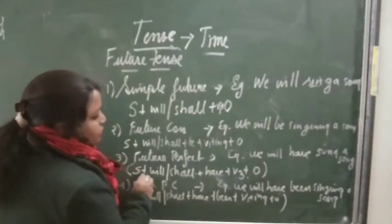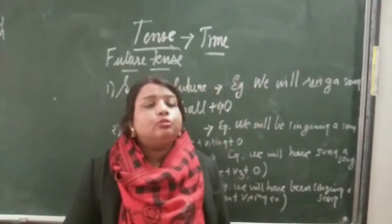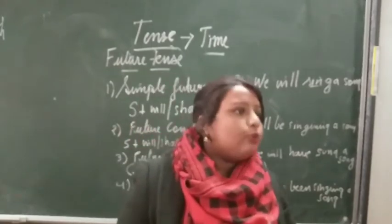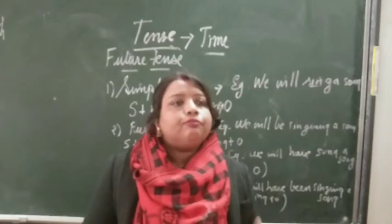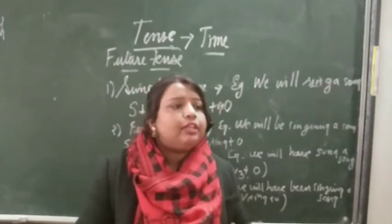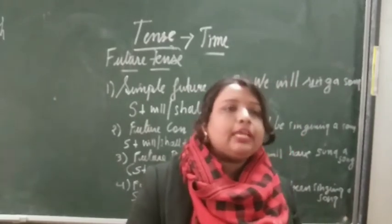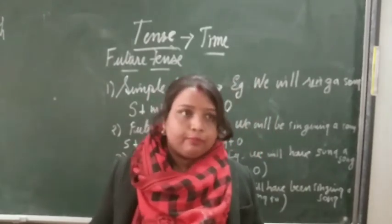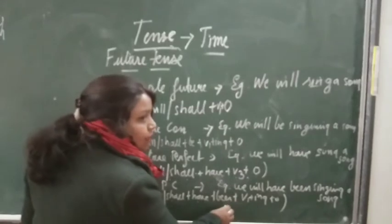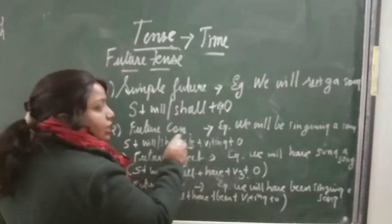In perfect form: subject plus will or shall plus have. Regarding shall — previously shall was used with 'we' and 'I,' but now 'will' is accepted with all persons. You can use shall, no marks will be deducted. But if you want to use 'will' with all persons, you can. Shall you can use with we and I, but with we and I you can also use will. So will is accepted with all. In future continuous: will or shall plus be. In future perfect continuous: will or shall plus have been. Only then will it be a meaningful sentence.